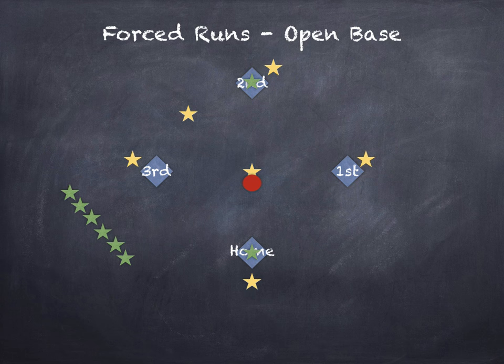Now look at this situation: first base is open. There's a base runner on second base but no base runner on first base. If the person on home plate kicks the ball, they're going to run to first base. The person on second base can choose whether or not they'd like to run — they don't have to run because first base is open. If there was a runner on first base already, they would have to go. If there's somebody on the base behind you, you have to run.